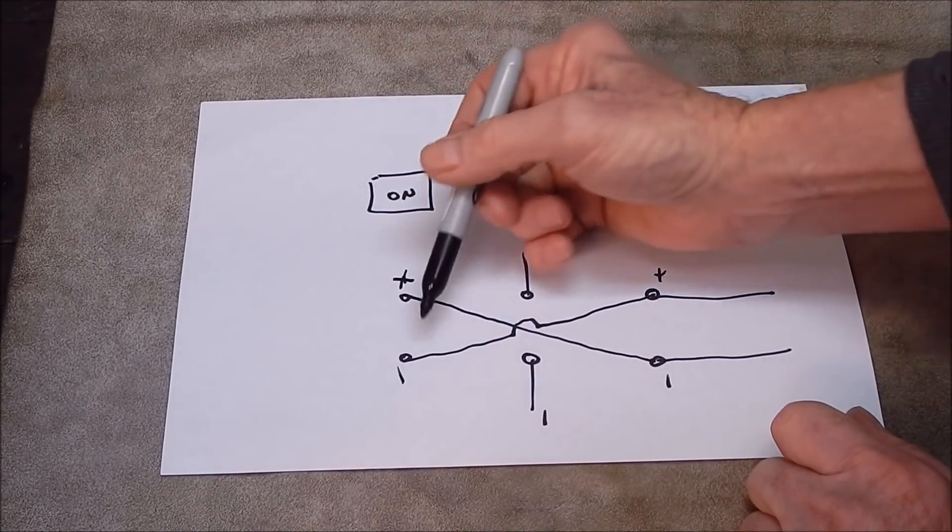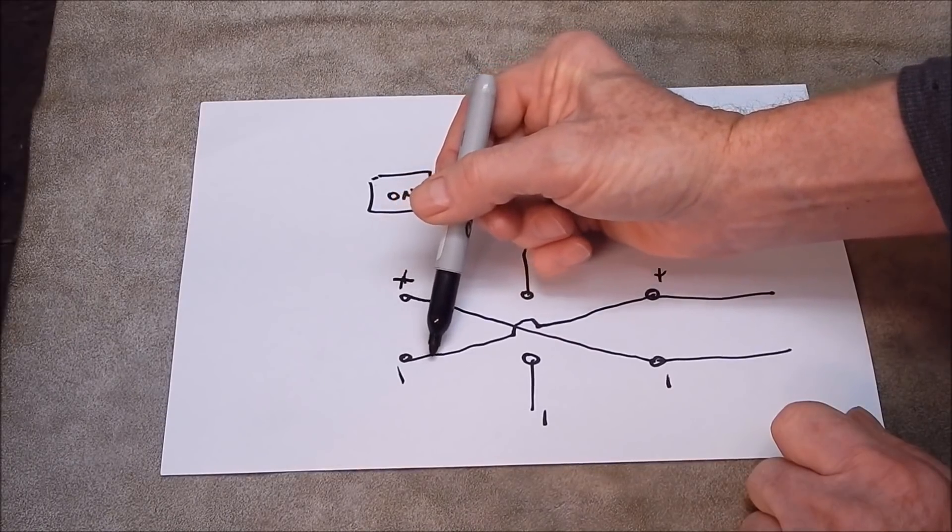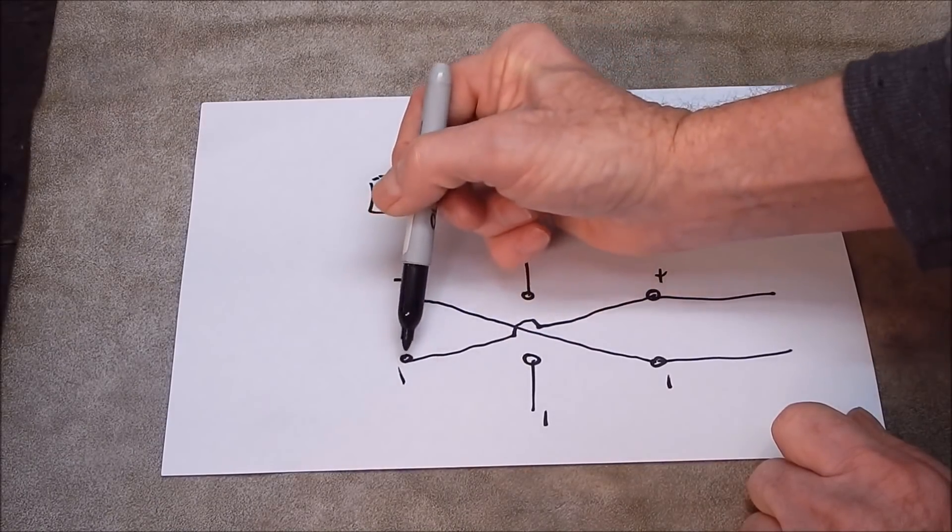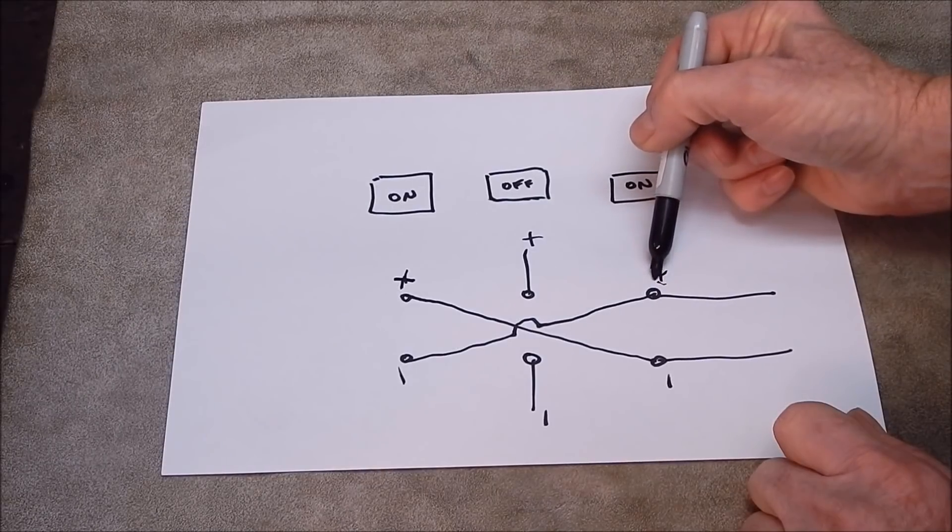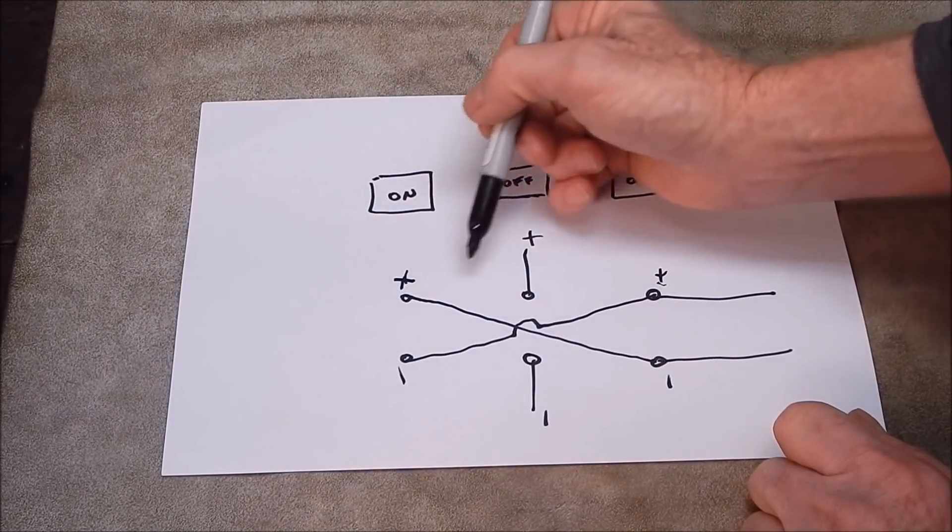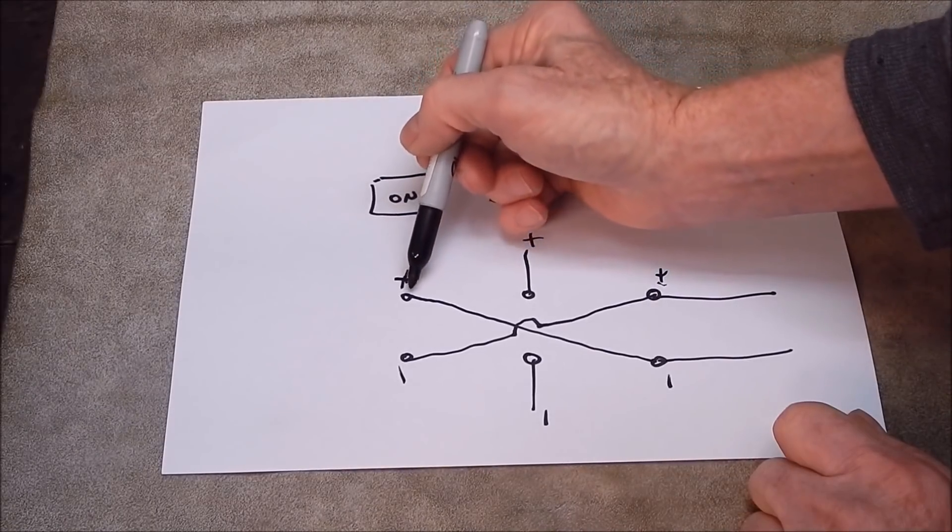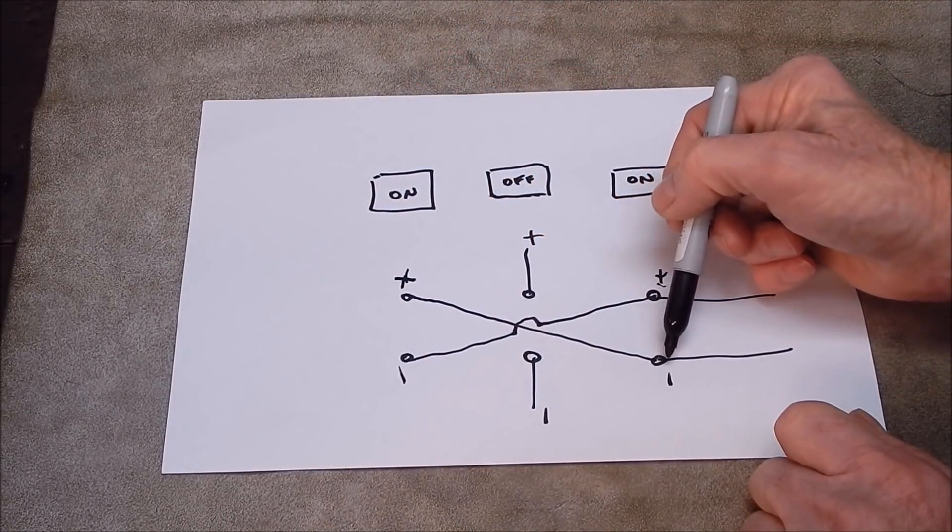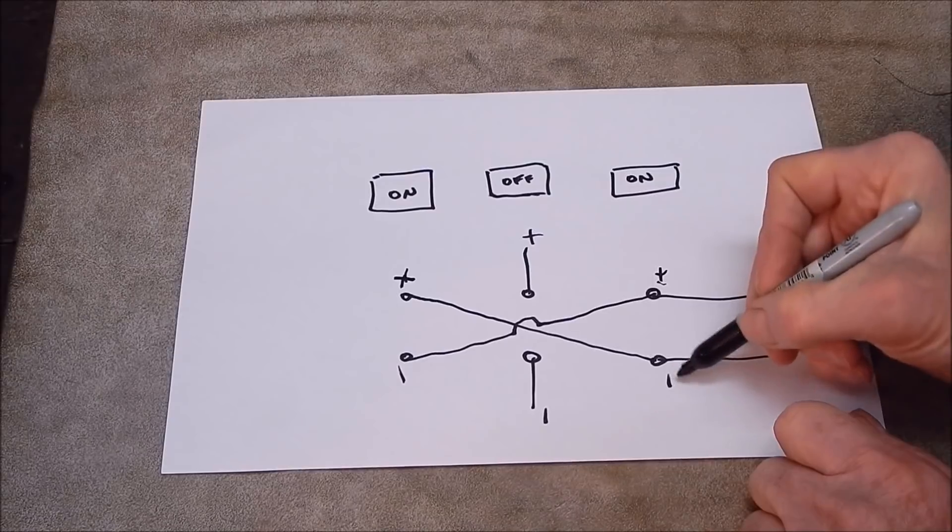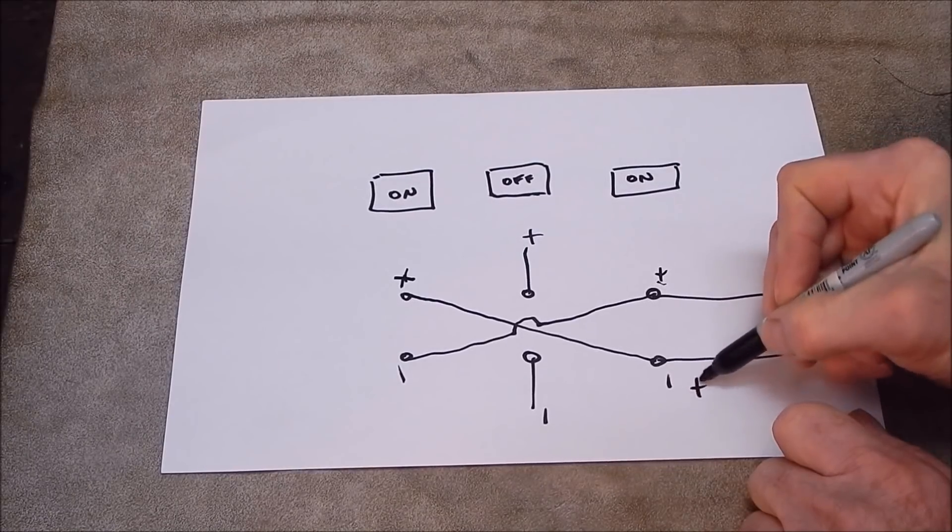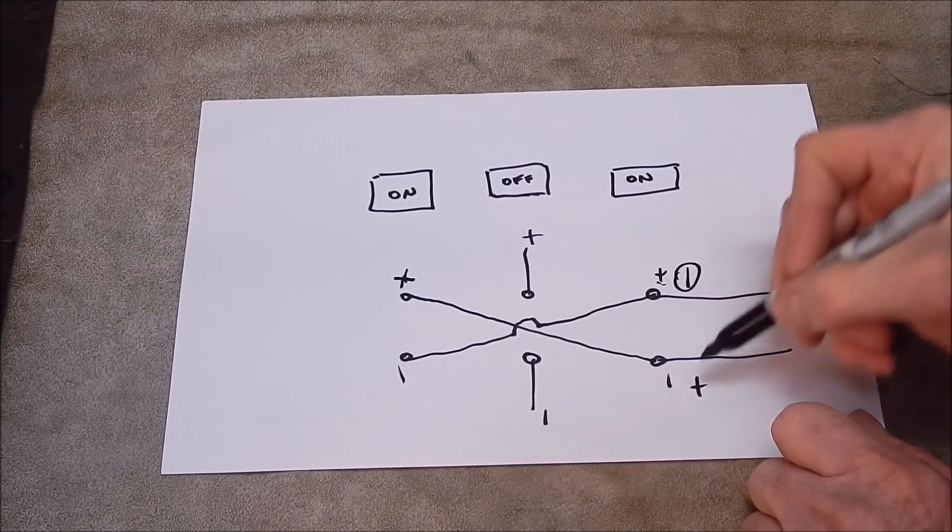But what's happening? The negative line then goes from here to here and then crosses back to this point here. Positive does the same thing. It goes from positive to positive, and then positive comes back to here, which is the negative side. So this then becomes positive and this becomes negative. So you effectively reverse the current flow to the motor.